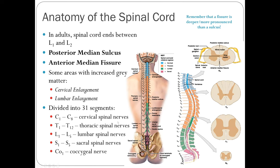The spinal cord is divided into 31 segments, which roughly correlate with the vertebrae from chapter 7. Keep in mind the spinal cord ends higher than the vertebral column — between L1 and L2. For example, the sacral section of the spinal cord is actually located up around T12 to L1, shown in pink.